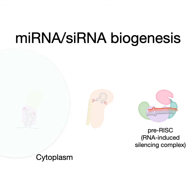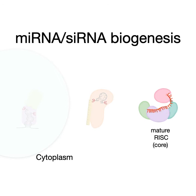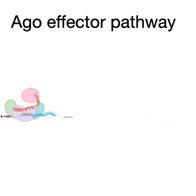As I was telling you, the microRNA or siRNA has a sequence that is going to match the target messenger RNAs it wants to downregulate. But right now, that sequence is hidden by the second strand of the RNA duplex, called the passenger strand. Argonaute has to eject that, and then you get the mature RISC.